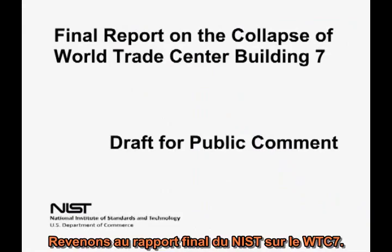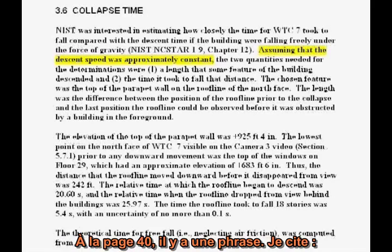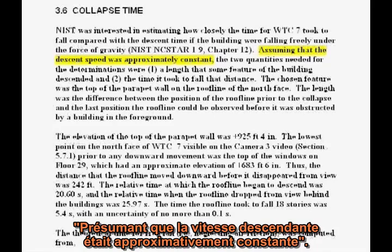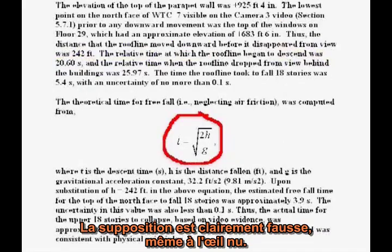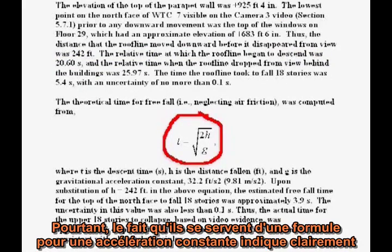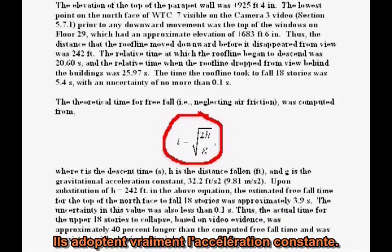Let's return to the NIST final report on WTC 7. On page 40, there is a phrase — quote — "assuming that the descent speed was approximately constant" — unquote. The assumption is clearly false from even casual observation. However, the fact that they proceed to use a formula for constant acceleration clearly indicates the constant speed reference is a misstatement. They're actually assuming constant acceleration.